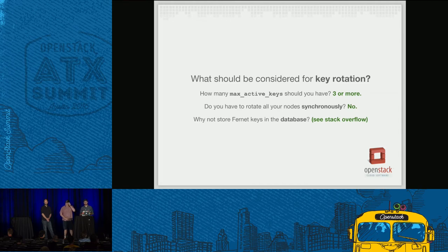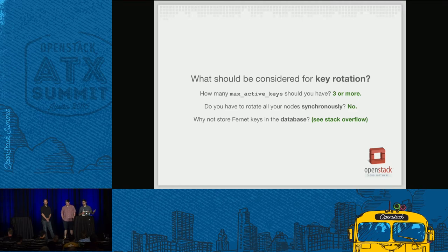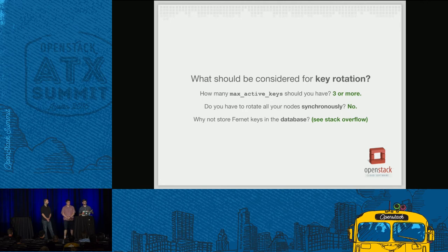Some other questions around key rotation: the default max active keys is set to three — we suggest three or more, because below three you're prone to removing a key that's been used to encrypt a token that's still valid. When deploying a cluster of Keystone nodes, you don't have to initiate rotation simultaneously — you can rotate on a single Keystone node, inspect that everything works, make sure tokens issued from that node are validatable across the rest of your cluster, and then sync the repository out to the other nodes.